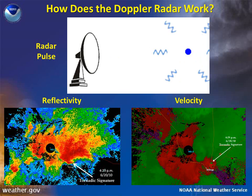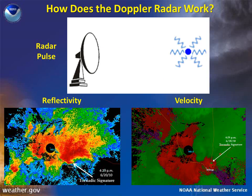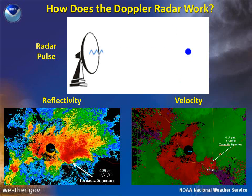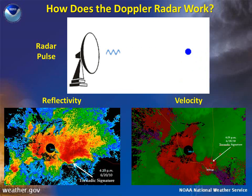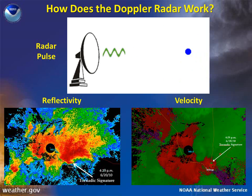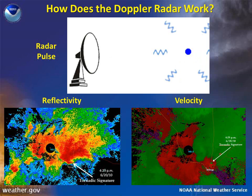Reflectivity shows where precipitation is, while velocity information helps us identify rotation in strong winds within a storm, allows us to determine wind speed and direction behind a cold front, and allows us to determine which direction and how fast an object in the atmosphere is moving.